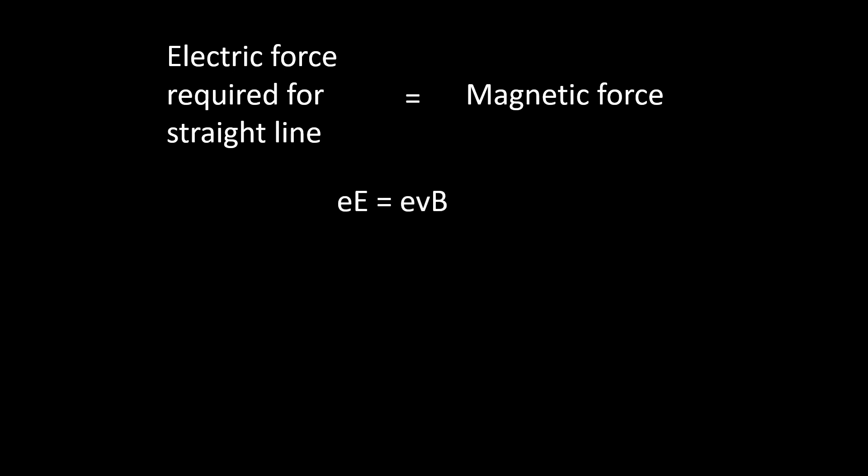Therefore, we can say that lowercase e times capital E equals eVB, where capital E is electric field. And upon rearranging this, we get V, or velocity, equals E over B, or electric field over magnetic field.